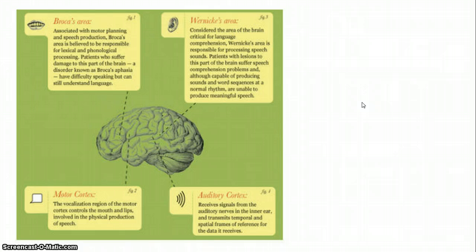Wernicke's area is the area responsible for comprehension and for processing speech sounds, so that we do not hear each letter being articulated one at a time when someone speaks, but we hear it in a flow. So we hear entire words and then we link words together as phrases and they become sentences.